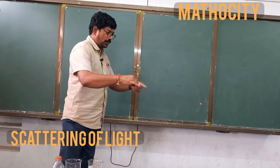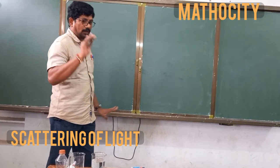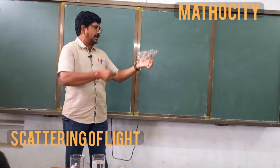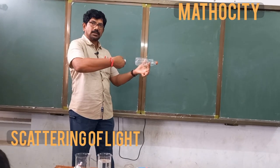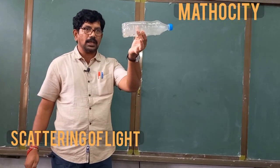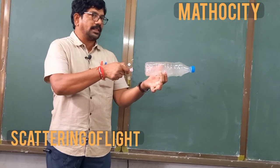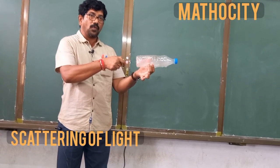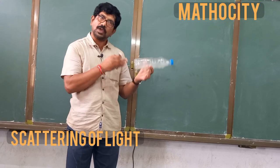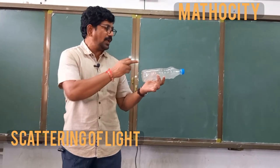Now observe this activity. There is nothing in this bottle — only air is present. You cannot see the path in between. Now I fill the bottle with smoke. Can you see the path? Yes, sir — it is clearly visible. So why, when there is air, you cannot see the path, but when I fill the bottle with smoke particles, you can see it? We will learn why this is happening.